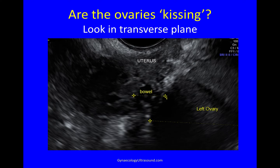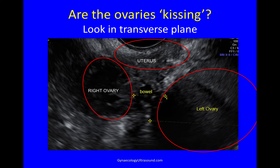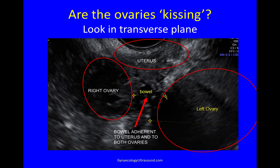In the transverse plane you can see the uterus, the right ovary, the left ovary, and then there's bowel in between. So these ovaries are not kissing but they are both adhering to the back of the uterus, and there's bowel in between them glued down to everything. The transverse plane is really useful for this.